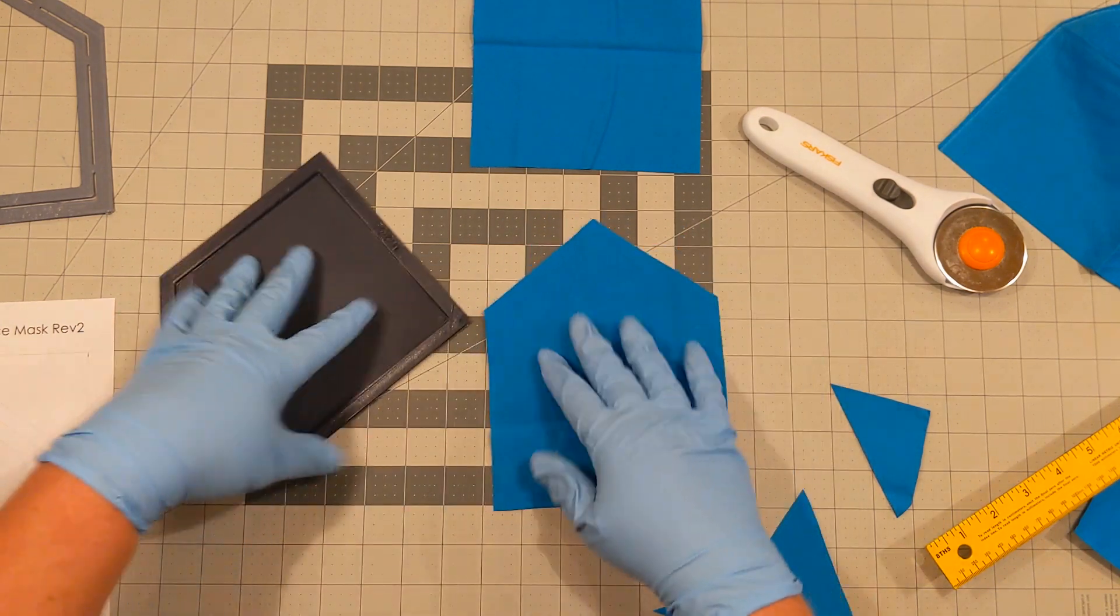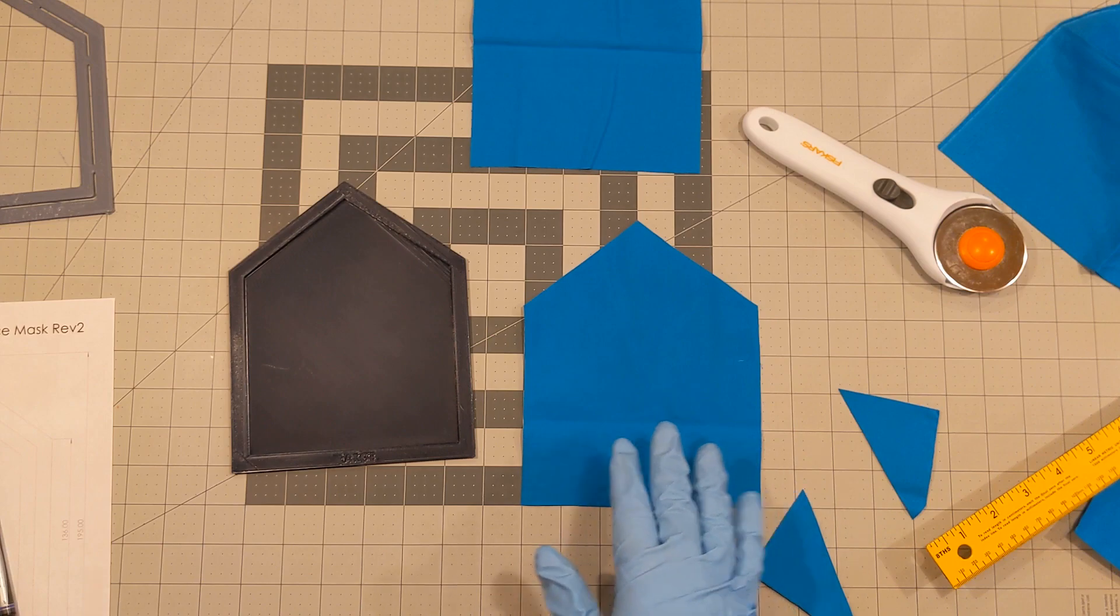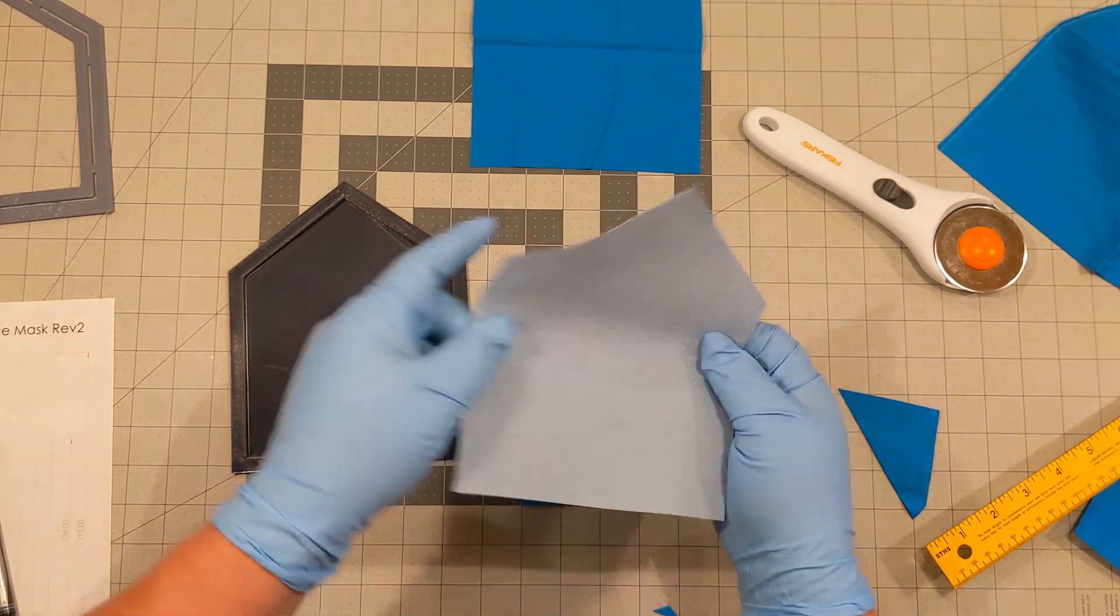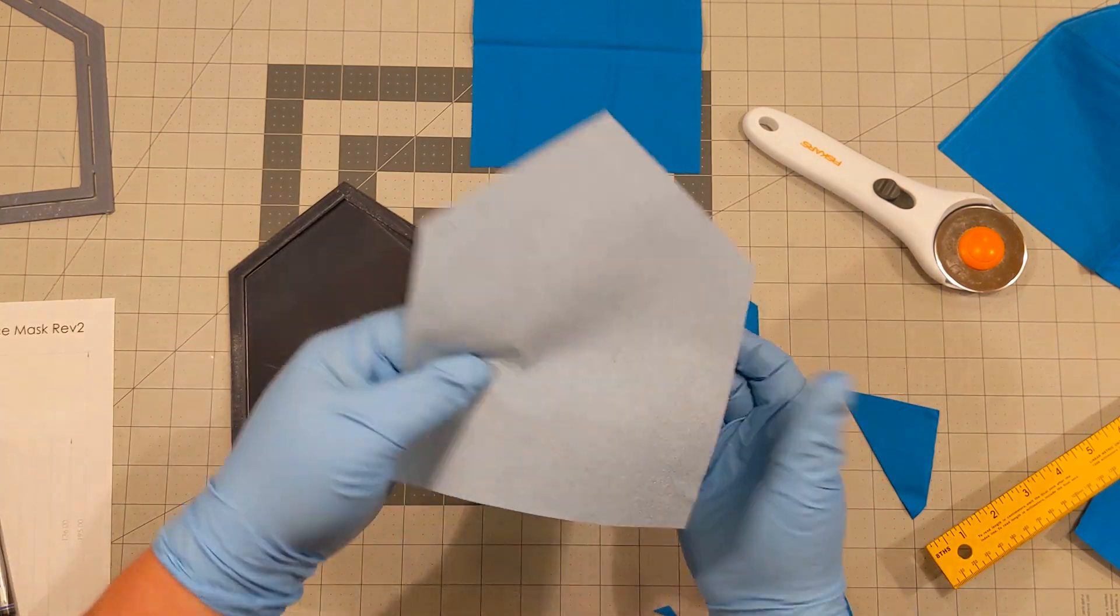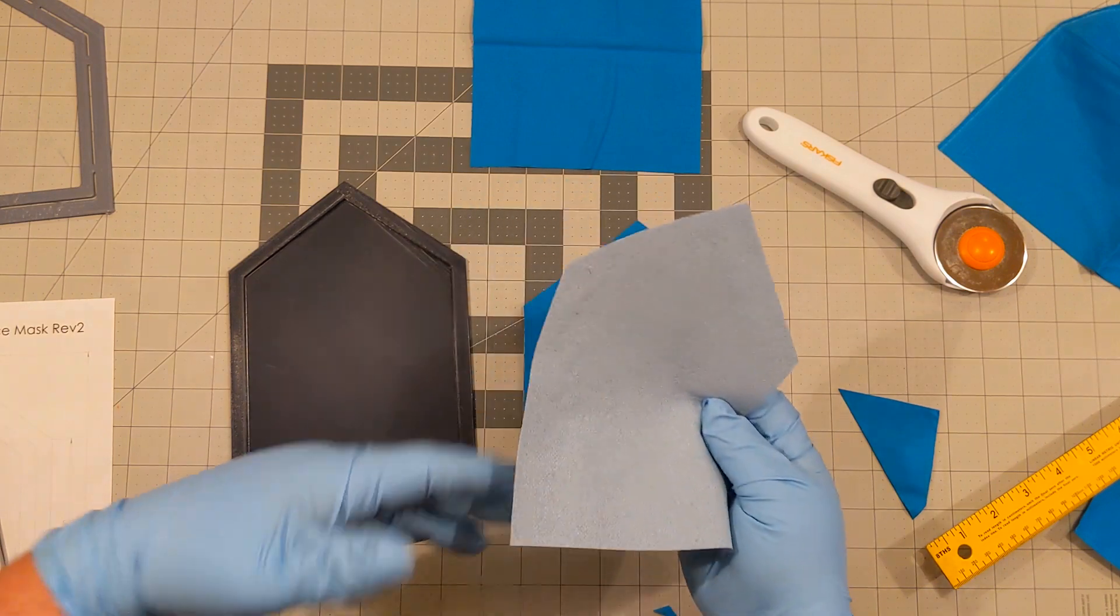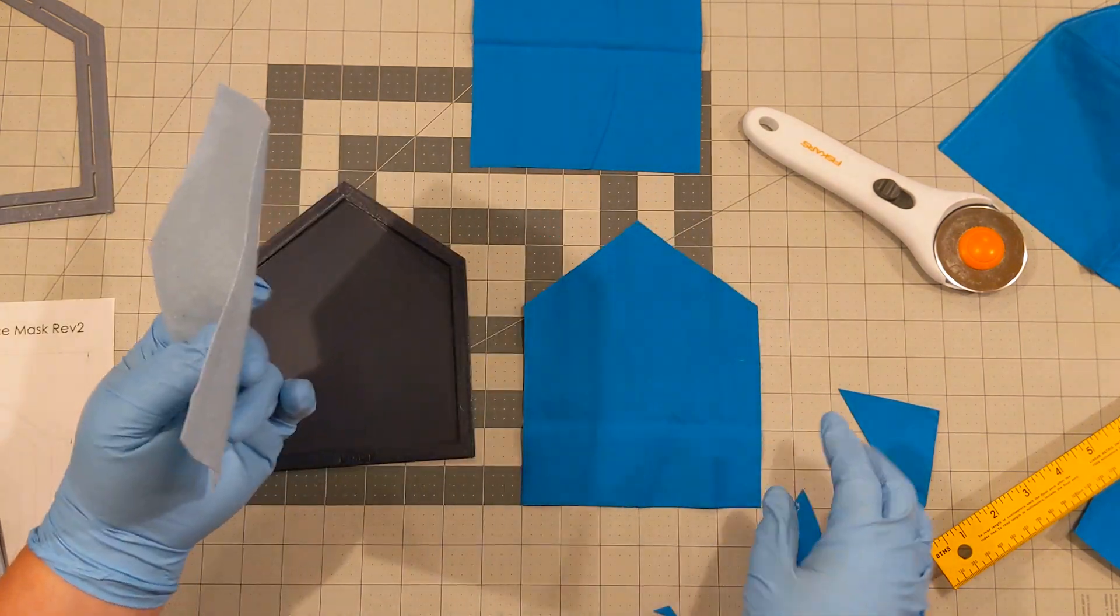Now, this same cutting template can be used to cut out your blue paper towels if you wanted to. That's an option. Or your other materials as well.